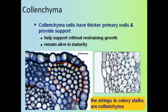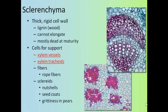Sclerenchyma cells have thicker and more rigid cell walls than the other plant cells. Sclerenchyma cells are usually dead at maturity, like the xylem, and they support the xylem tissue. Sclerenchyma cells are also the cells that give the gritty texture to the pears that you eat.